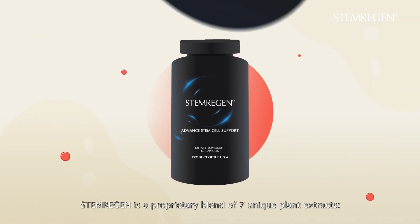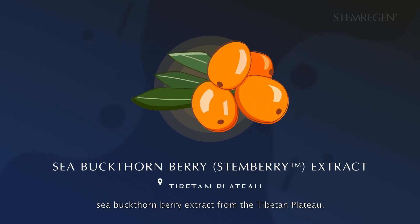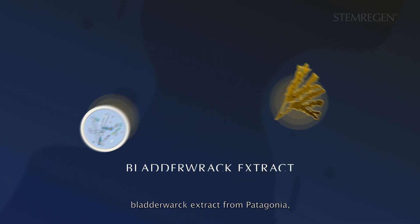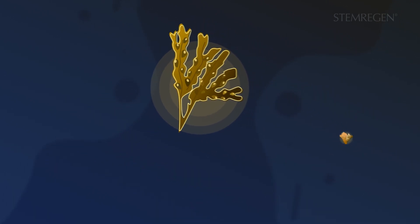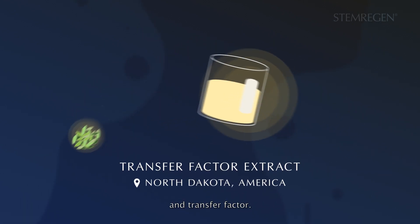Stemregen is a proprietary blend of seven unique plant extracts: sea buckthornberry extract from the Tibetan Plateau, AFA extract from Klamath Lake, bladderwrack extract from Patagonia, Noto Ginseng extract, aloe from Madagascar, beta-glucan, and transfer factor.